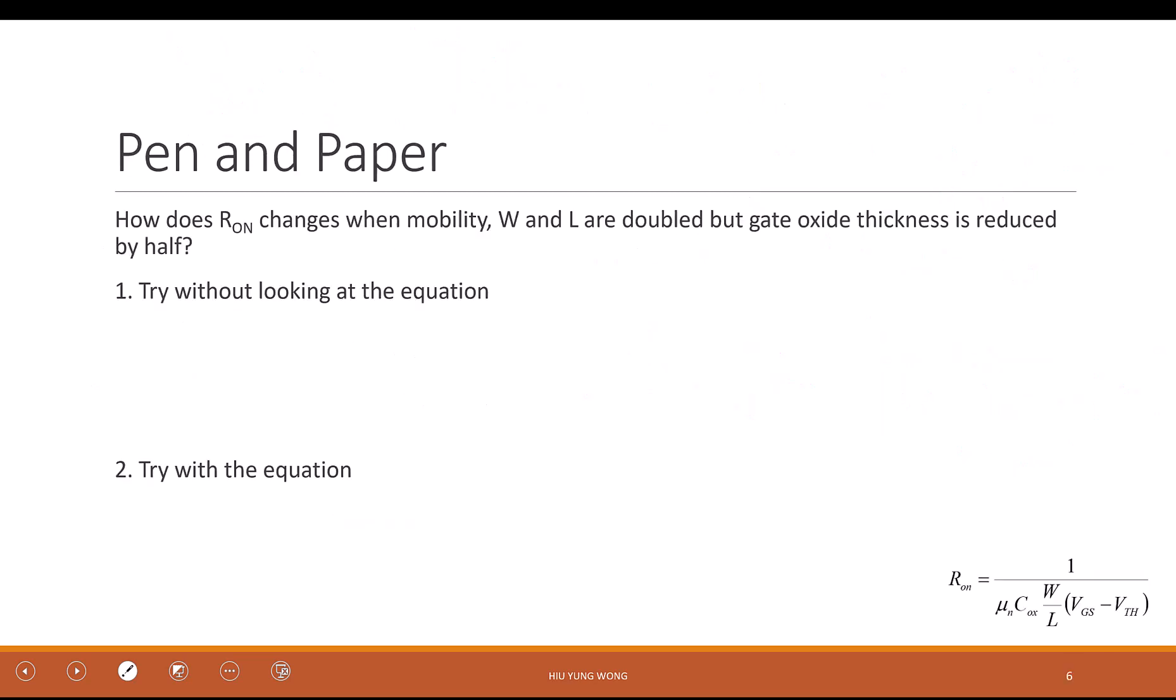So let's quickly see if you understand what it is. We actually can do this. I do have an equation on the lower left corner. Don't look at that. Now, if I change the mobility W L double, and then gate oxide thickness reduced by half. What will happen to the R_on? Think it as a resistor. I have a resistor. How about let's try together.